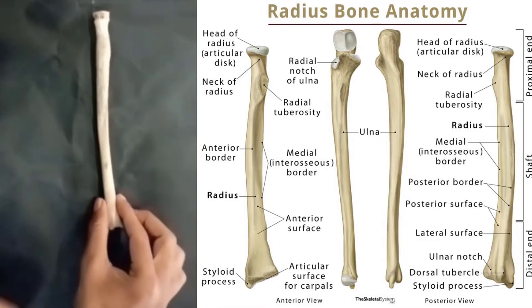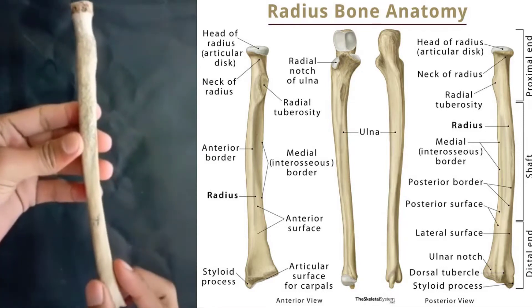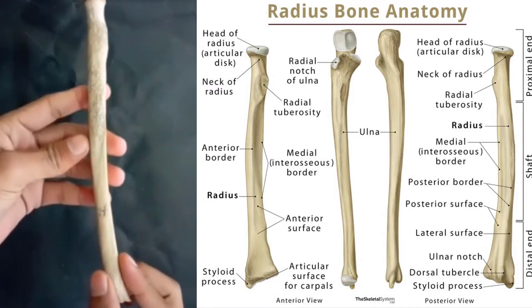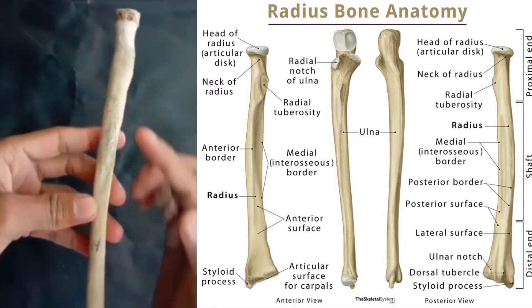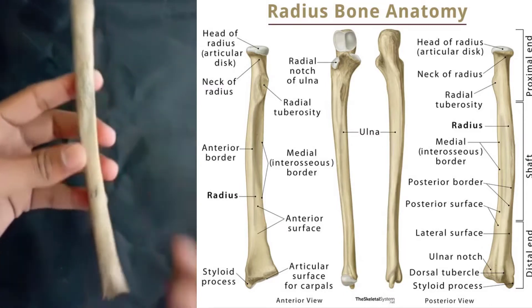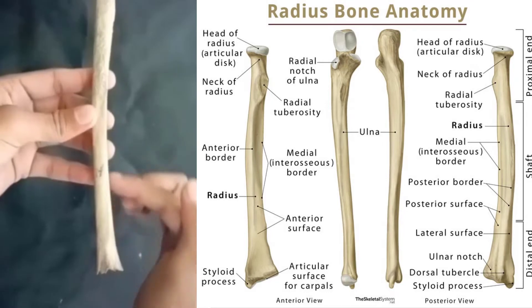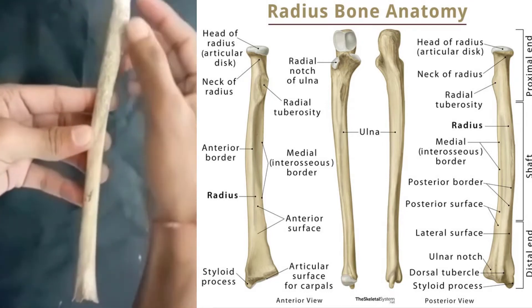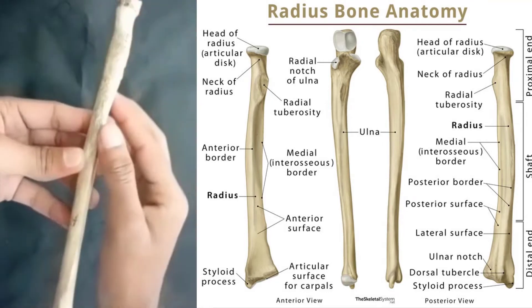Now we will discuss its position. The radius, or radial bone, is one of the two large bones of the forearm, the other being the ulna. It extends from the lateral side of the elbow to the thumb side of the wrist and runs parallel to the ulna.